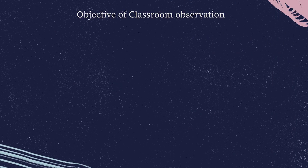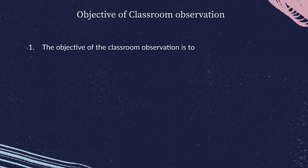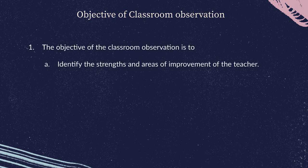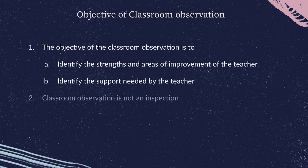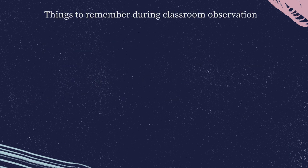In order to provide coaching to teachers, you will first need to know where they are currently in their journey to implement Khan Academy. The objective of the classroom observation is to identify the strengths and areas of improvement of the teacher. Remember, a classroom observation is not an inspection. In an inspection the objective is to evaluate the performance of the teacher, however the objective of classroom observation is to identify how best we can support a particular teacher.